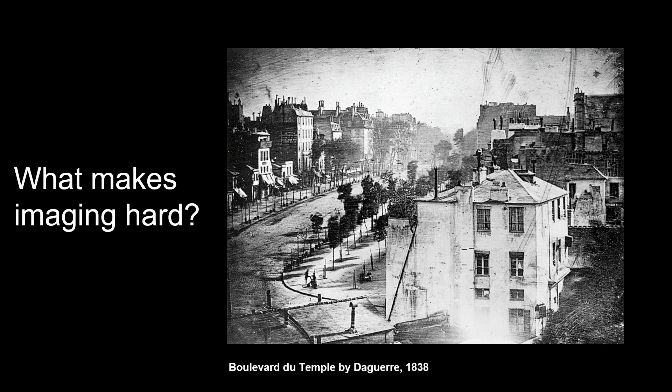The reason why you don't see any person there is this picture was taken over three to five minutes, meaning there are actually a lot of people, but these people are moving and the horses are moving, so they are all washed out. The only person you can see is this person here who is just standing still because their shoes are getting cleaned. So it's considered to be the first photograph of a person.